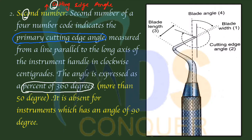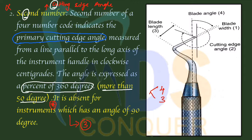The second number in most situations will be more than 50 degrees. There are cases where the second number is absent — these are the 3-number formulas. The second number is absent for instruments which have a cutting edge angle of exactly 90 degrees. Whenever the angle is other than 90 degrees, the second number will be included.